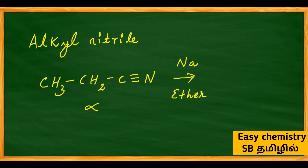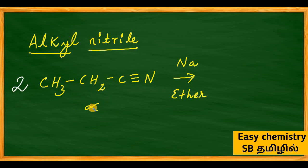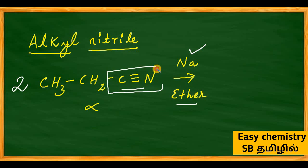Thorpe-Nitrile Condensation reaction. The reactant is called alkyl-nitrile. What is alkyl-nitrile? For example, propanenitrile: CH3-CH2-C≡N. The C triple bond N is a very important group. The adjacent carbon is called the alpha carbon, and its hydrogen is the alpha hydrogen — similar to the aldol condensation reaction.